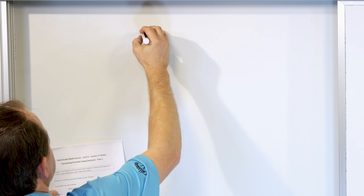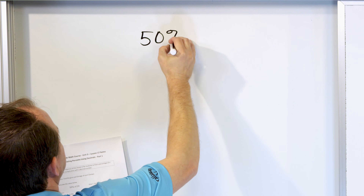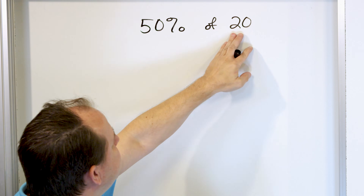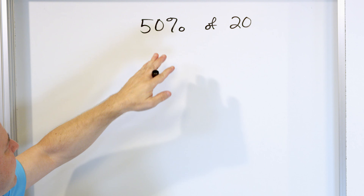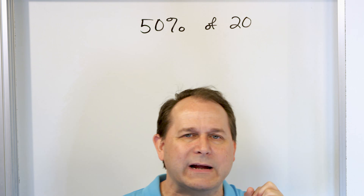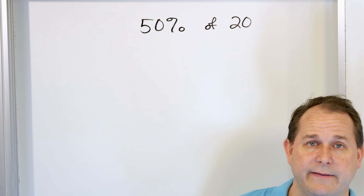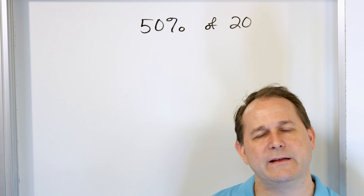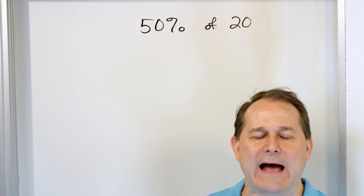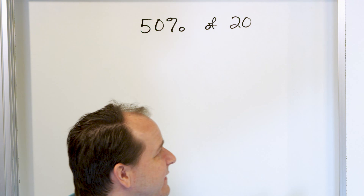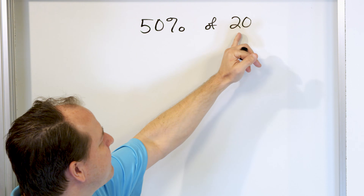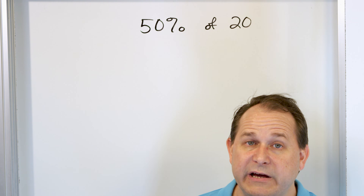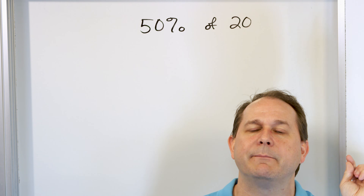Let's say that we're trying to calculate 50% of 20 of something. Let's say that I have 20 pencils in my hand and I tell somebody I'm going to give you 50% of those pencils. What I'm telling you is since 0% is nothing and 100% is everything of what I have, then 50% is right in the middle. It is half of what I have. So you already know the answer — if I give away 50% of this, I'm giving away half. I'm going to give you 10 pencils. That is half of 20. But what we're going to do here is do it by multiplying by the decimal equivalent.